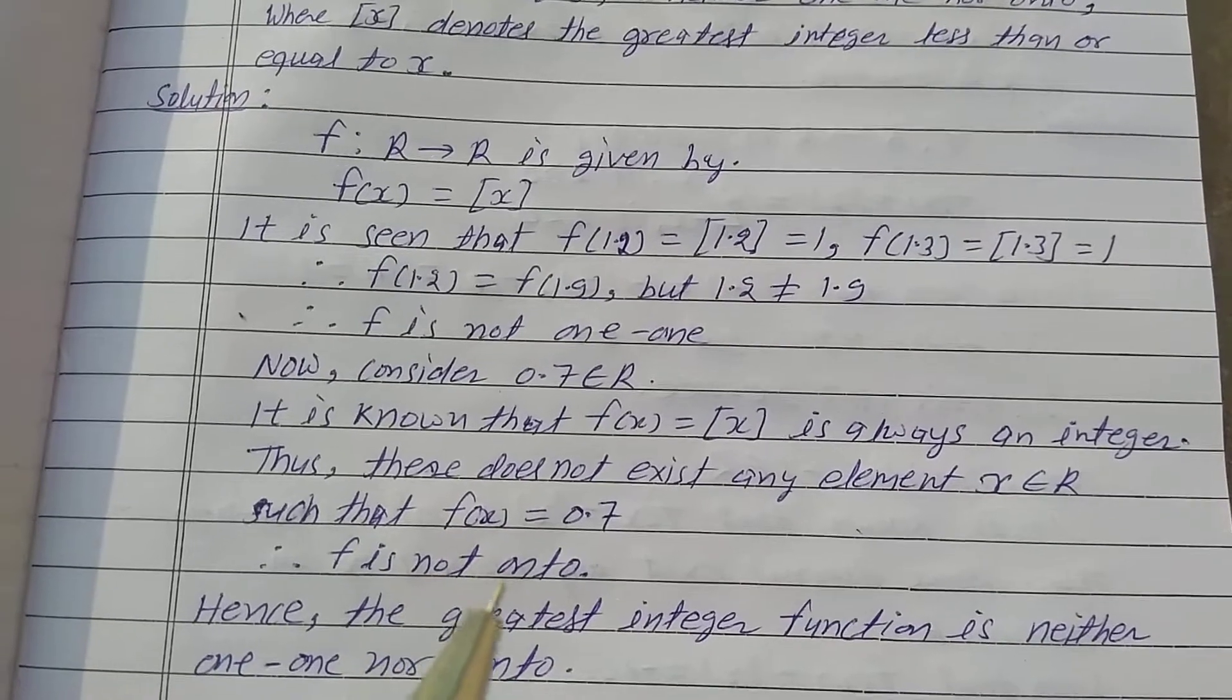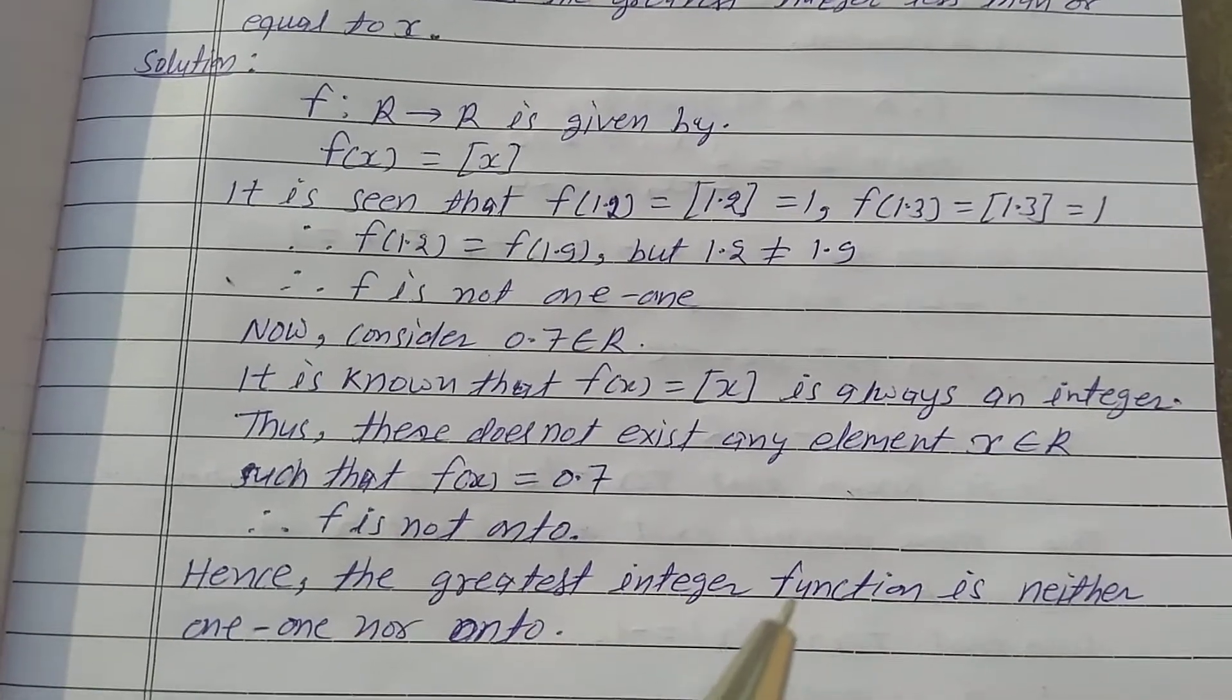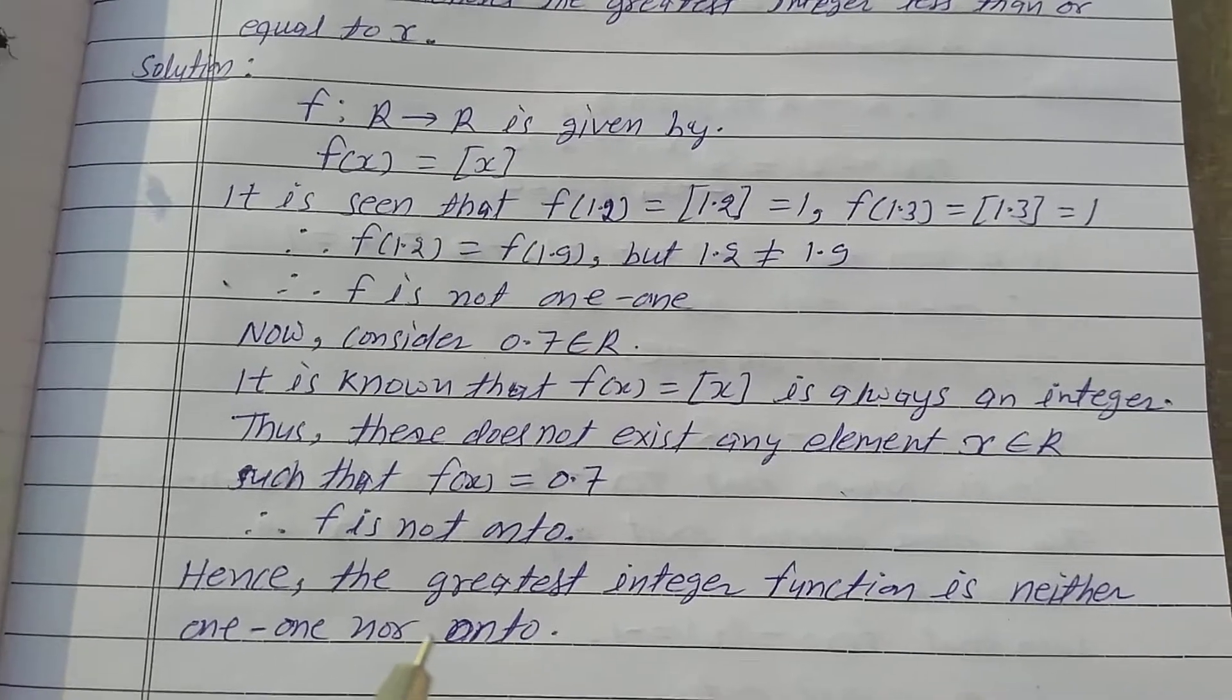Therefore f is not onto. Hence the greatest integer function is neither one-one nor onto.